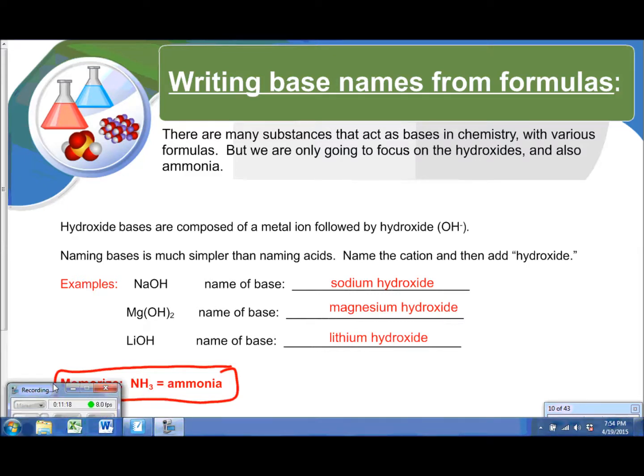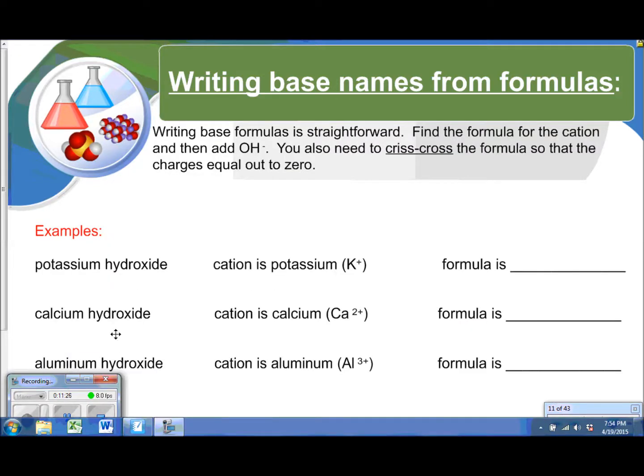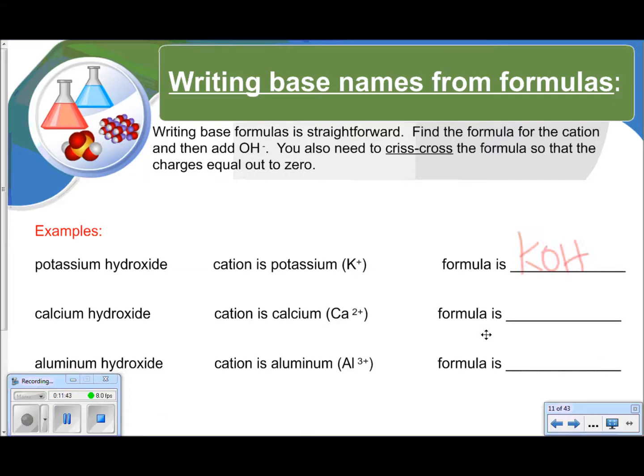Please do not forget, we must have memorized ammonia NH3, not to be confused with ammonium NH4+. We also need to be able to go backwards with bases. So if I give you the name, I'm going to need the formula. So you just take the cation, in this case potassium, which is K positive 1, and crisscross it with hydroxide, which is OH minus 1. So here I've got KOH.